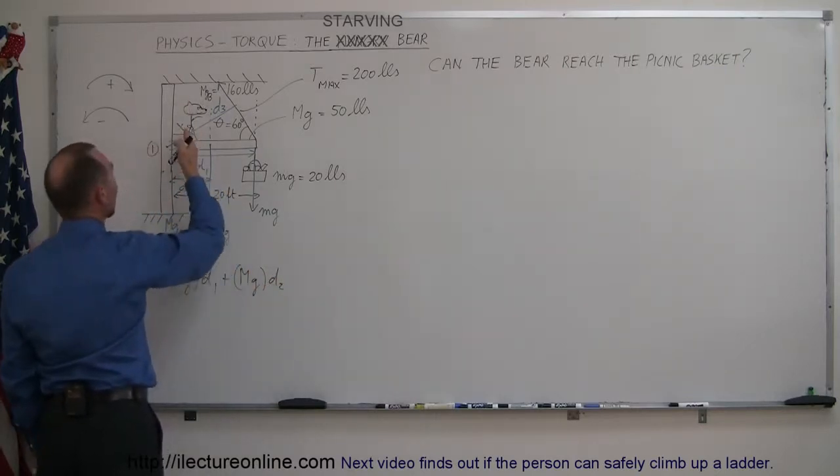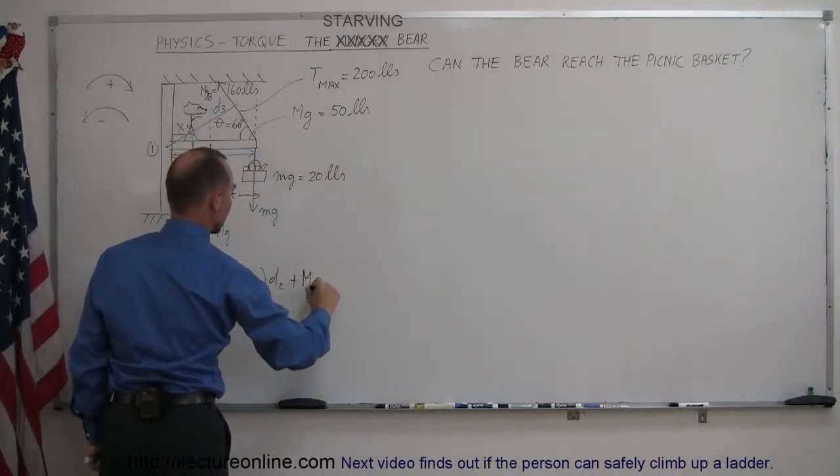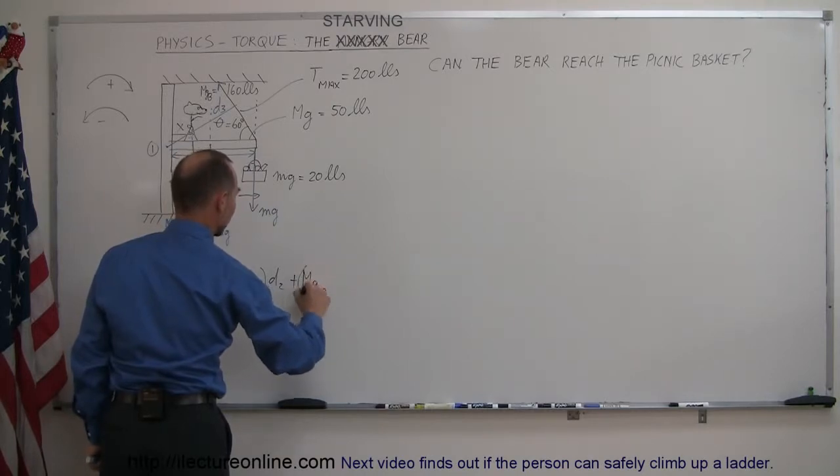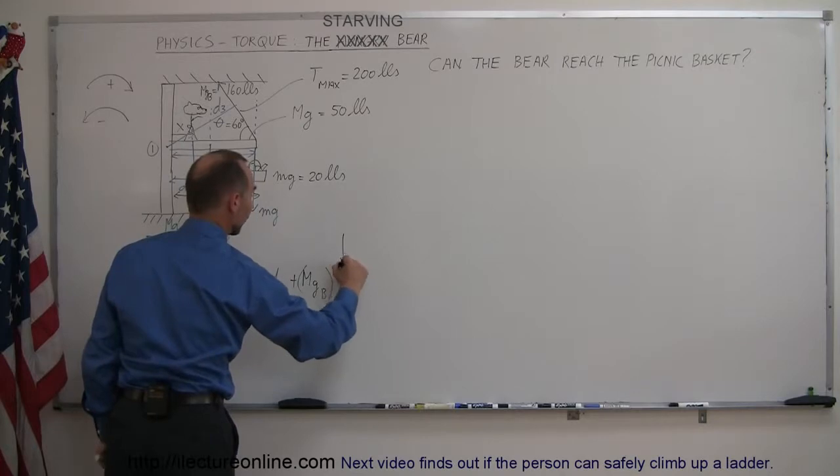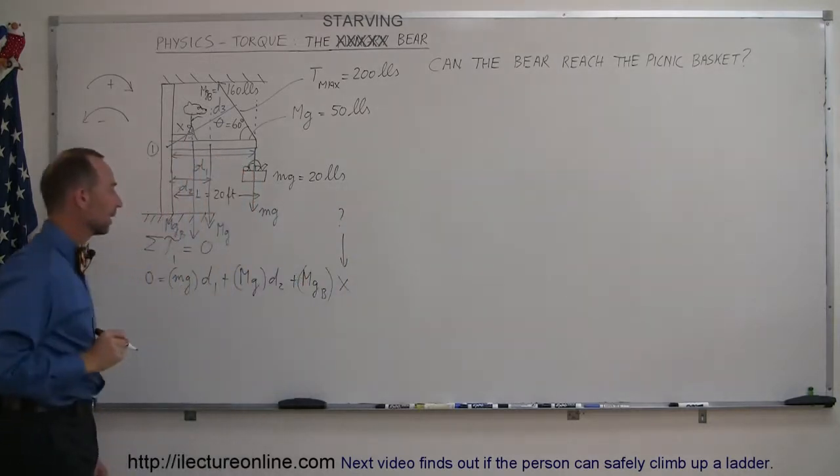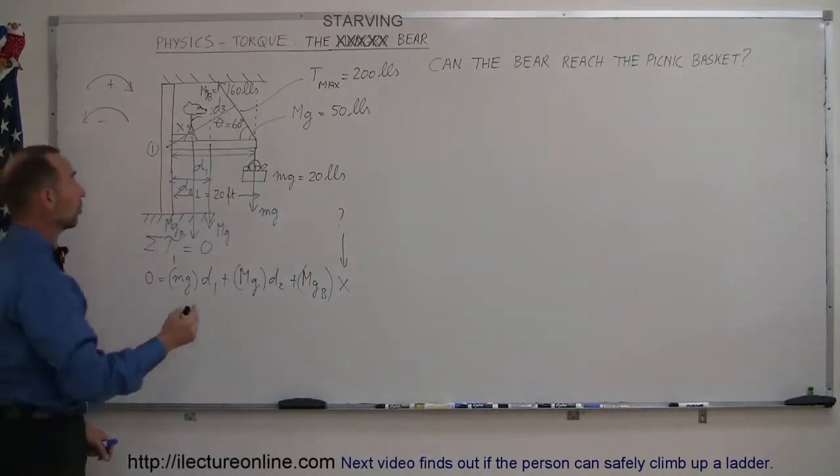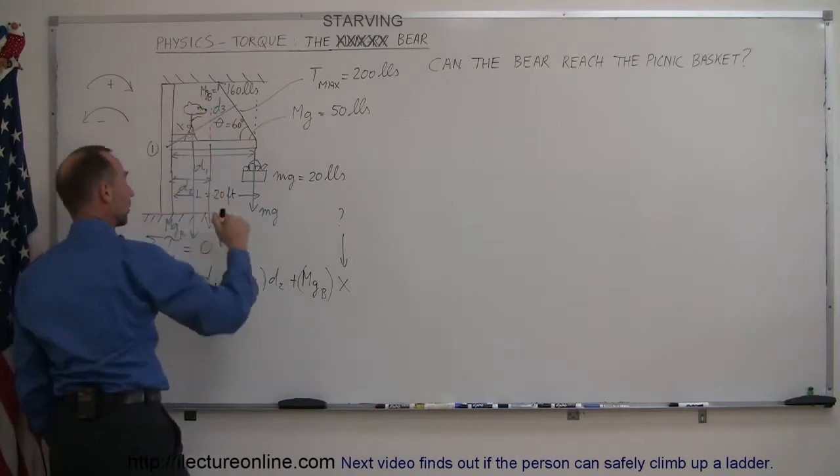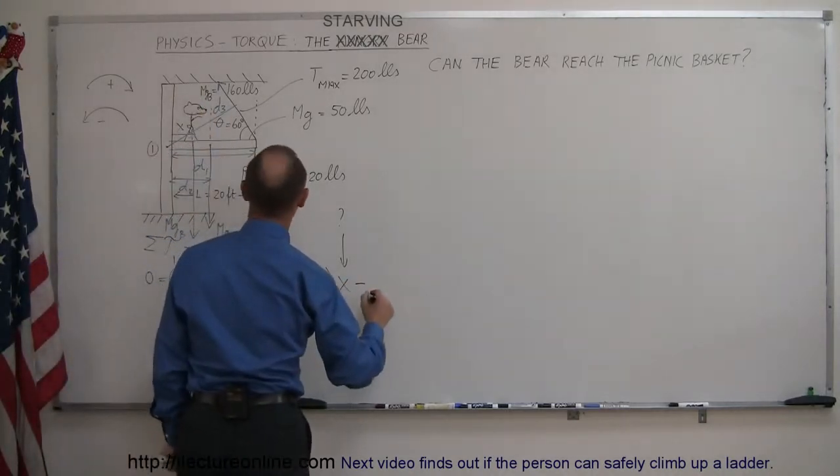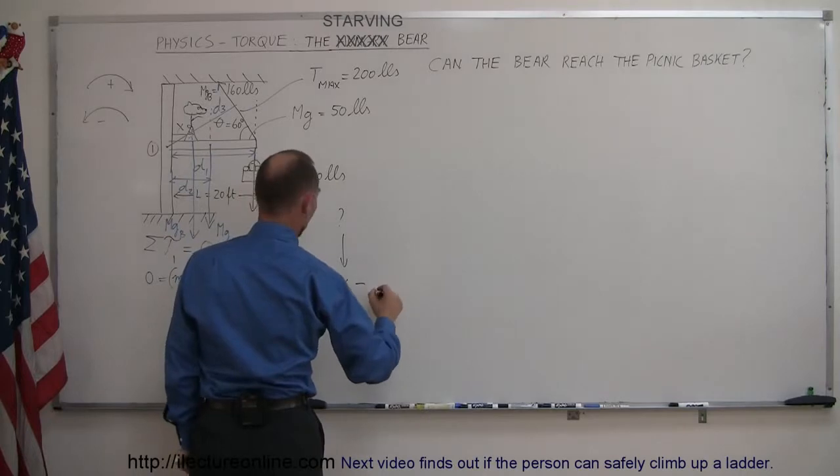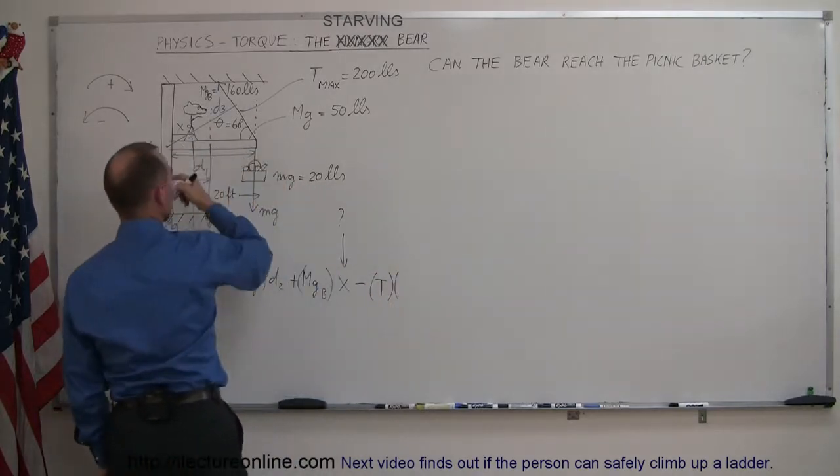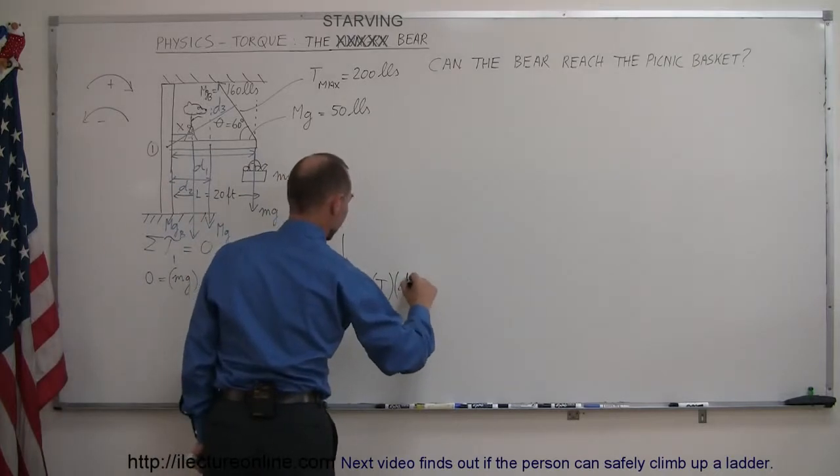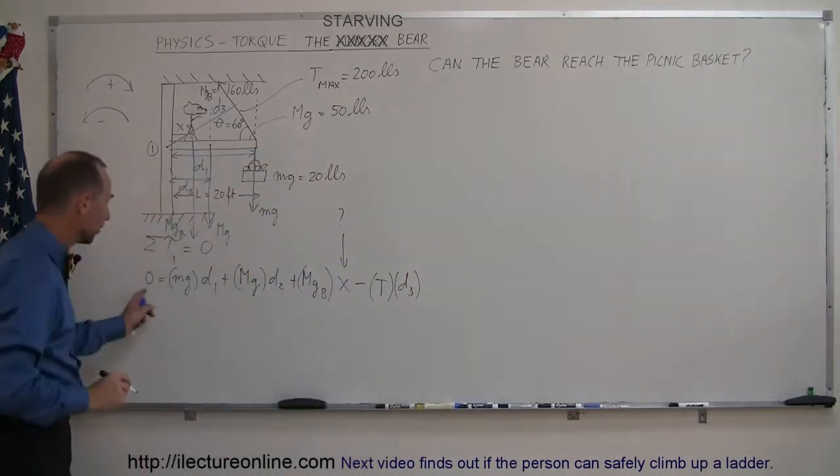Then we have the weight of the bear which is a plus MGB, the weight of the bear times the distance, in this case that would be X, which is what we're looking for, right, that's the question. And then we have one more torque which is the cable pulling in the opposite direction. That would be a minus torque. And that would be the tension T times the distance which is D3. And all that added together adds up to zero.